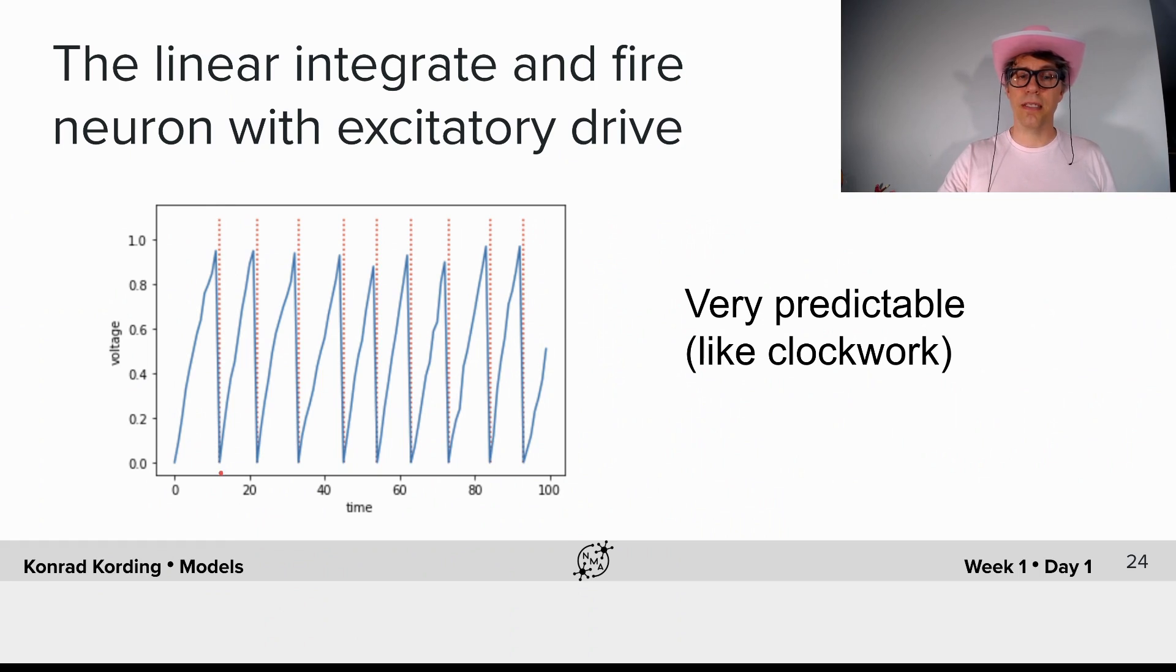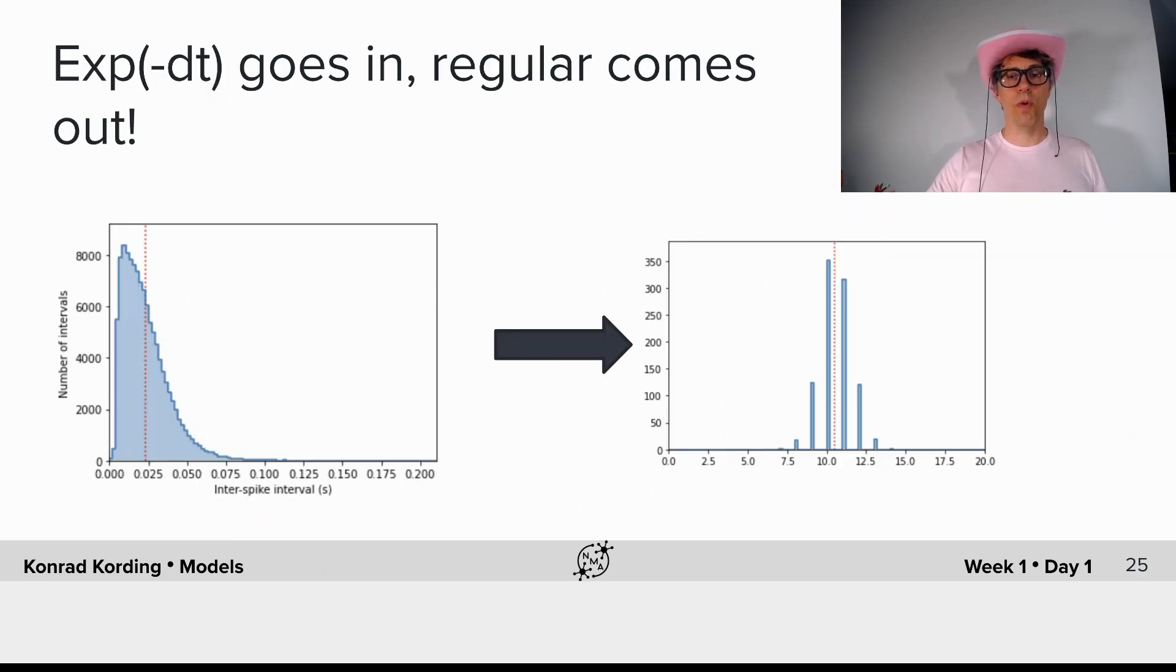Every time we spike, there is this red line here. But the fact that it's very predictable, in a way, is a violation of what we were looking for.